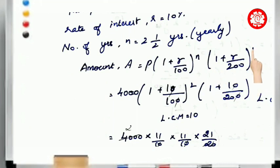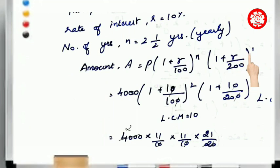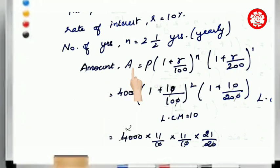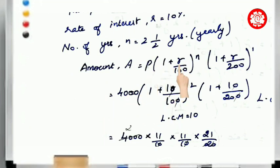In this case, the rate of interest corresponds to 12 months in a year. We will substitute: 4000 times 1 plus R value 10 by 100, whole square — that is, N equals 2 for the two full years.